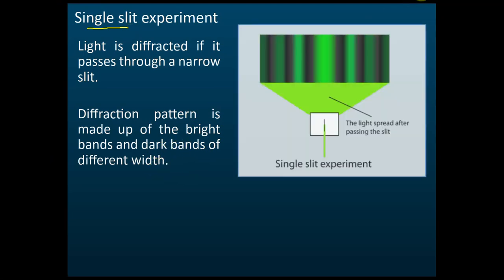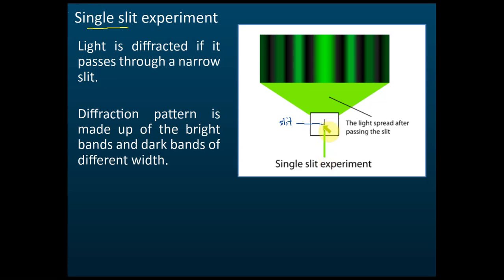The dark and bright bands have different widths. This is the slit — we call it a single slit. After this, in the next lesson, we will discuss interference with a double slit experiment, which is different. For the single slit experiment, the monochromatic light passes through the slit, spreads to a wider area due to diffraction, and you get bright and dark bands. In the middle, there should be a bright band.